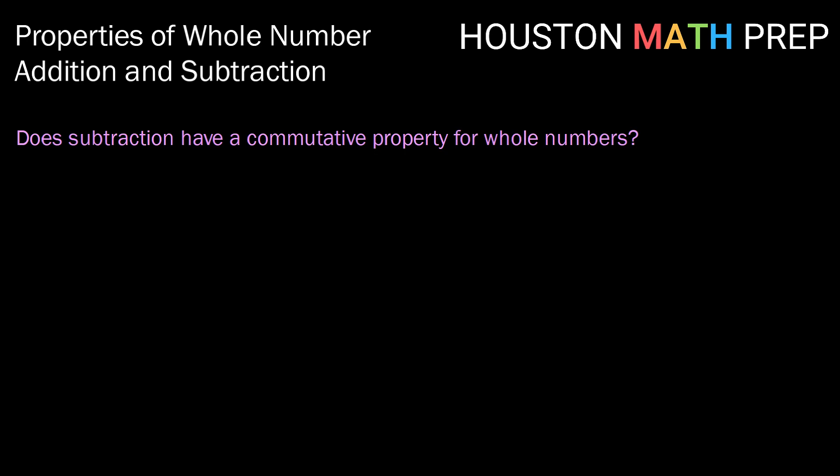What about the commutative property for whole numbers? Is it true that we can subtract in any order and get the same answer? Well, take 6 and 4 again. We just showed that 6 minus 4 is equal to 2, but that 4 minus 6 does not exist for the whole numbers. So clearly, 6 minus 4 is not the same as 4 minus 6. So no, subtraction does not have the commutative property for whole numbers.